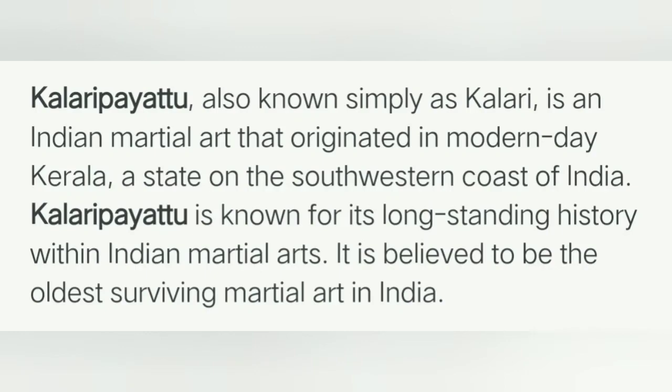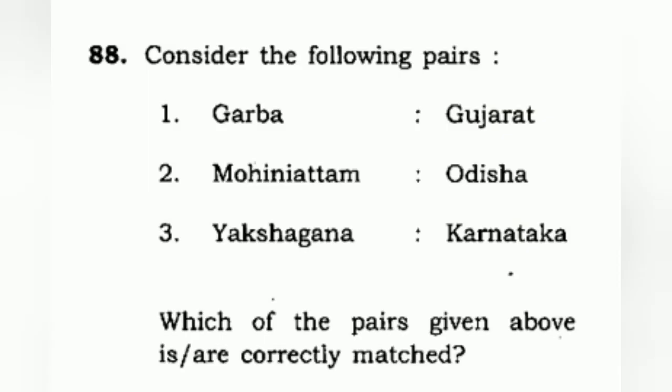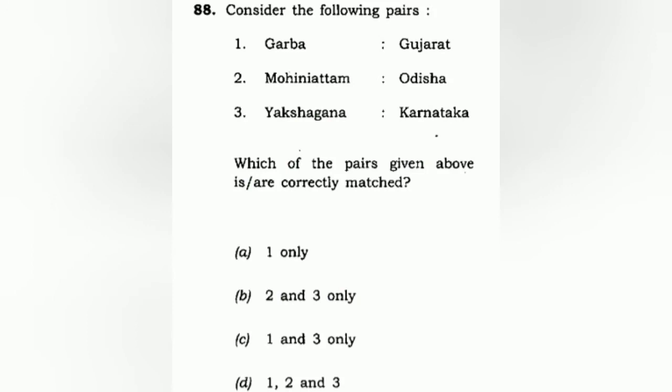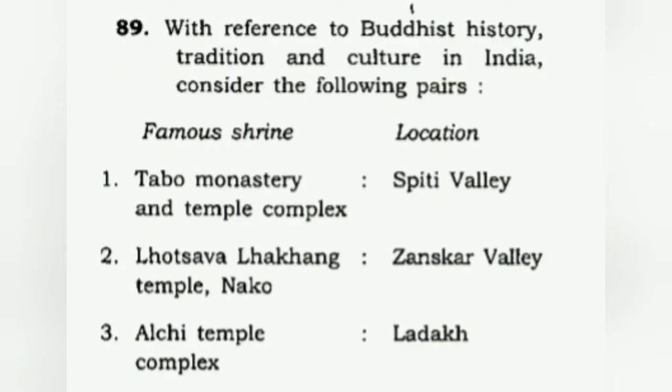We need to consider the following pairs of dance forms and their states, and check whether they are correctly matched. Garba from Gujarat is very relevant and correct. Yakshagana from Karnataka is also the correct answer. However, for Odisha, Mohiniattam is incorrect because Mohiniattam is from Kerala — it has its origin in the temples of Kerala. The correct answer is C: one and three only.